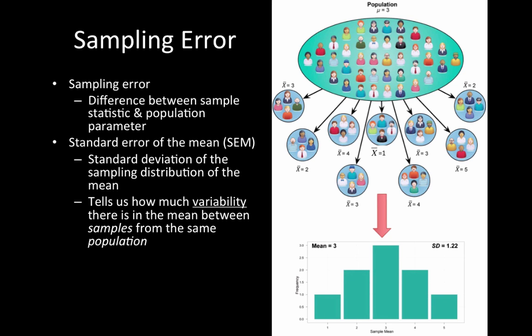In Chapter 3, we learned about measures of variability and dispersion. Standard deviation told us variability within one sample—between individuals, cases, or participants within that sample.